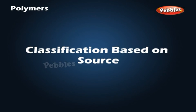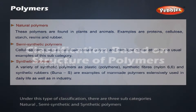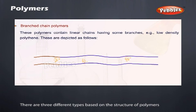Classification based on source: Under this type of classification, there are three subcategories — natural, semi-synthetic, and synthetic polymers. Classification based on structure of polymers: There are three different types based on the structure of polymers.